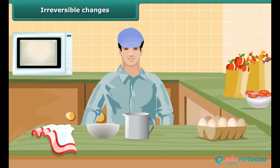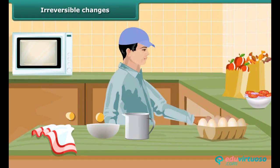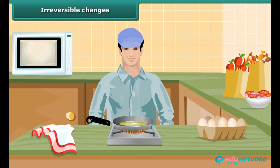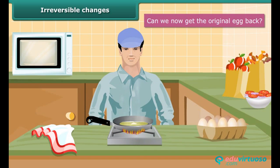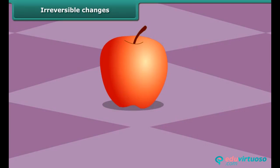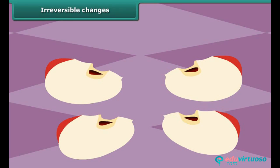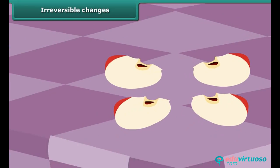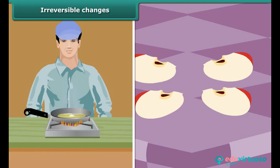Irreversible changes. Let us now look at some more changes and find out whether we can reverse them. Let's try breaking an egg and beating it for an omelette, then frying it on a pan. Can we now get the original egg back? Let's cut an apple into four pieces — can we get the whole apple back again? These are changes that cannot be reversed and are called irreversible changes.